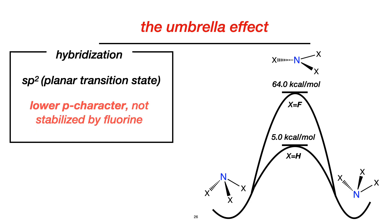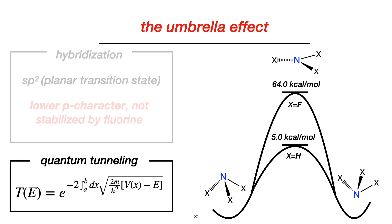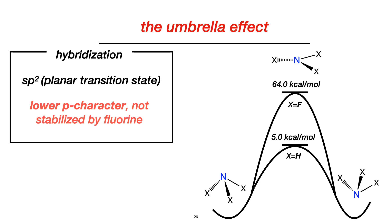If we study these systems to analyze the umbrella effect, or nitrogen inversion, we see that the barrier for this to happen with nitrogen trifluoride is much larger than the one required for ammonia. This is because of a hybridization that happens to form an sp2 planar transition state. The sp2 configuration has a lower p character, which is not stabilized by fluorine, as stated by Bent's rule.